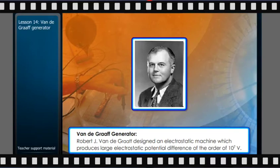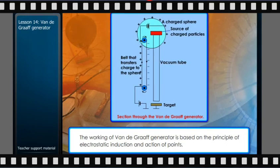Van de Graaff generator is an electrostatic machine which produces large electrostatic potential difference of the order of 10⁷ volts. The working of Van de Graaff generator is based on the principle of electrostatic induction and action of points.